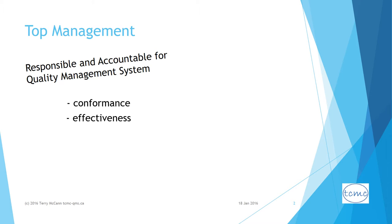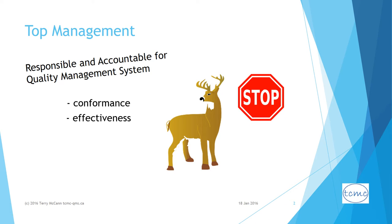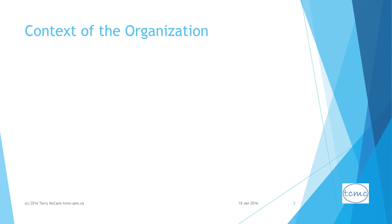The MR's accountability for QMS conformance and effectiveness has been reassigned to top management as a whole. This does not mean that an organization must shut down its quality department or lay off its quality manager if it has one. It simply means that the buck does not stop with that department or manager — responsibility for quality and conformance to the standard now clearly stretches all the way to top management.